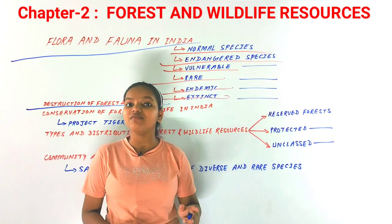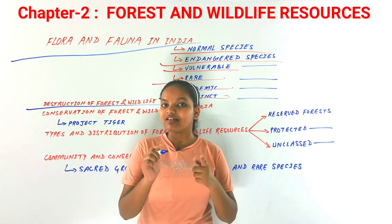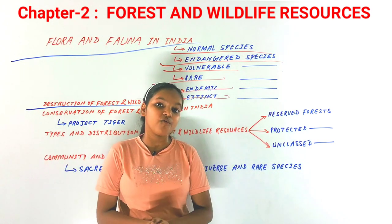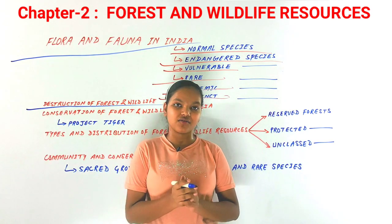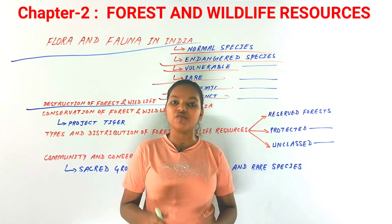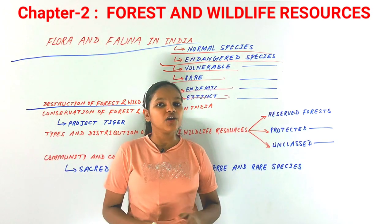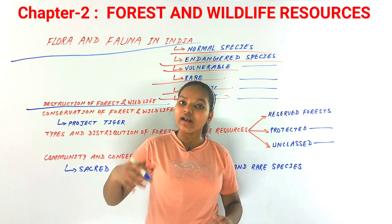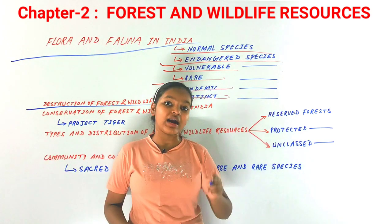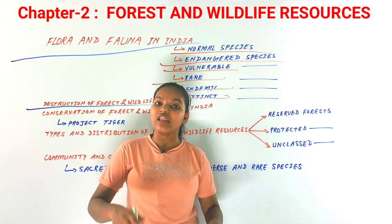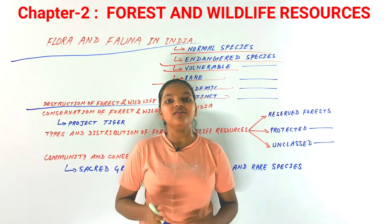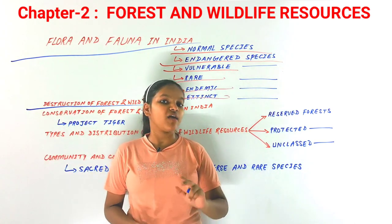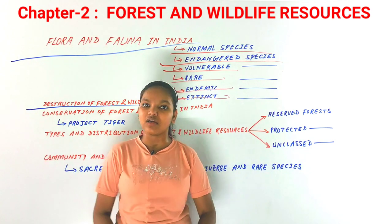Other causes of depletion include over-exploitation, mining, overgrazing, hunting, and poaching. Mining is one of the biggest issues — for example, in the Buxa Tiger Reserve in West Bengal, dolomite mining is ongoing, which is exploiting and degrading that reserve. Mining decreases the value of the land and contributes to the depletion of forest and wildlife resources.